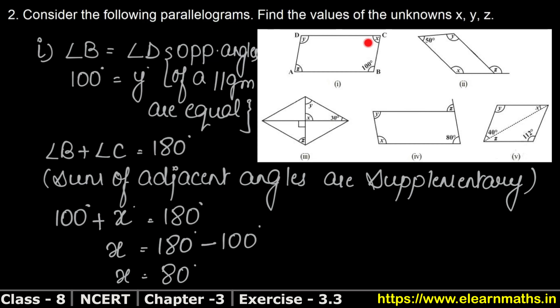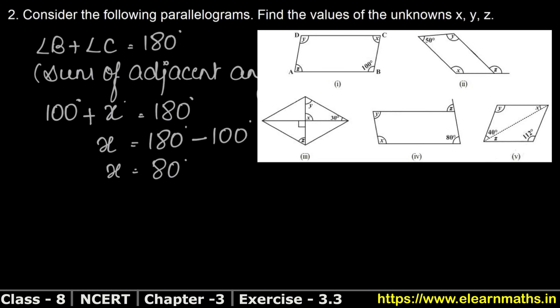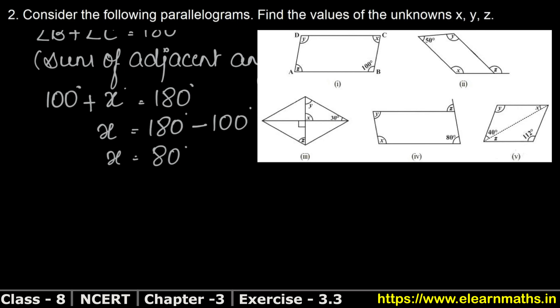Now since this is a parallelogram, angle A and angle C are equal because they are opposite angles. Opposite angles of a parallelogram are equal. So angle A equals angle C. Angle C is x, which we found to be 80 degrees. So angle A, which is z, also equals 80 degrees, because opposite angles of a parallelogram are equal.